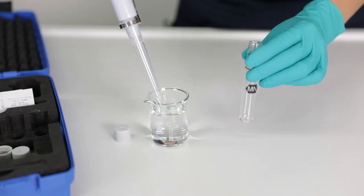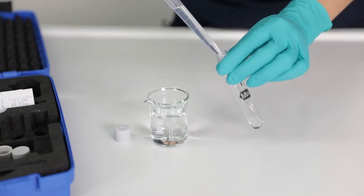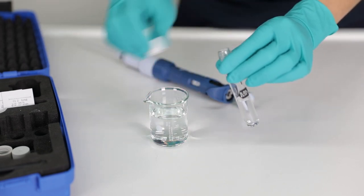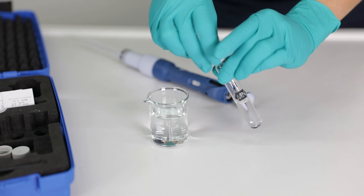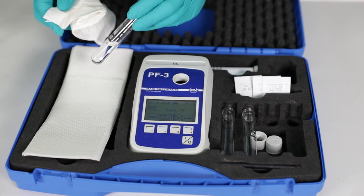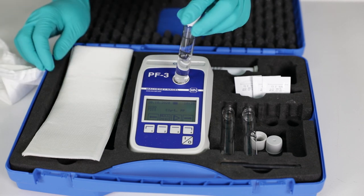Fill a cuvette with this liquid, but without adding any further chemicals. And insert it into the photometer to perform the serial measurement.